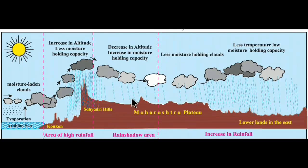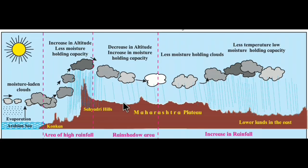This leeward region gets less rainfall. When we go further, the rainfall increases again. So this is the rain shadow area in India. The Satara and Khatav taluka of Maharashtra and the Marathwada area of Maharashtra are rain shadow regions. The Konkan region is the windward side where rainfall is heavy.